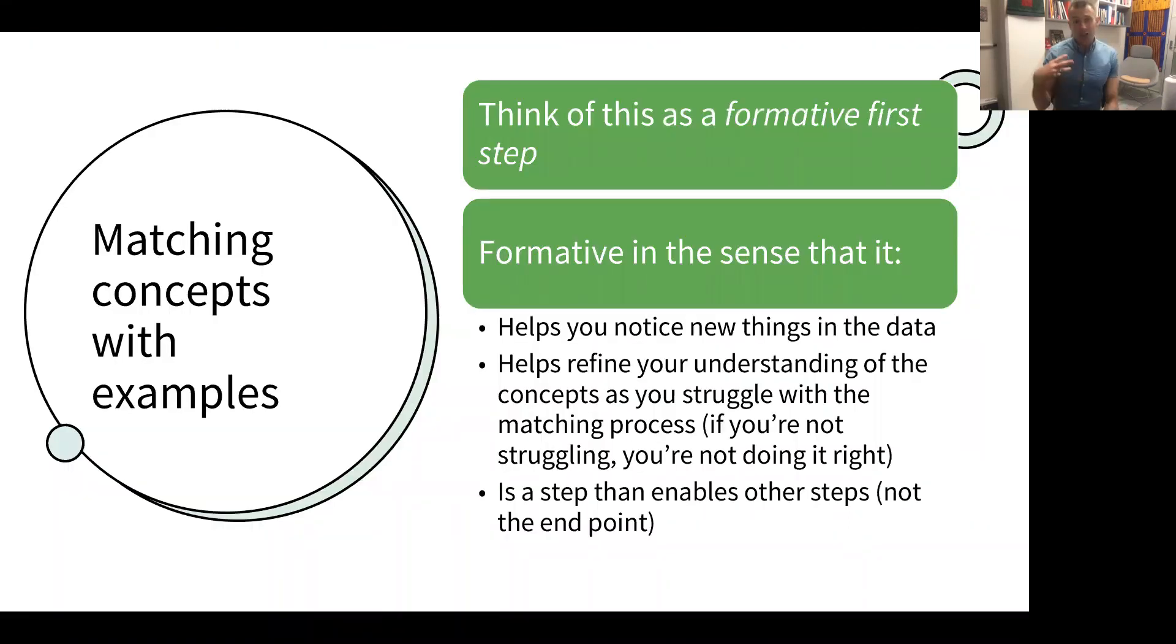So I'm going to suggest that this unfolds through three steps. And the first one involves matching concepts with examples from the data of some real event or something that somebody said or something that happened. And I think of this as a formative first step. And when I say formative, I mean that by looking for examples of a particular concept, for example, from a theory, it might help you see things in the data that you didn't see before, pay more attention to something somebody said or something you observed or heard or noticed in an image or whatever it might be.